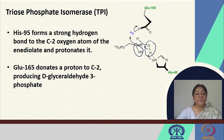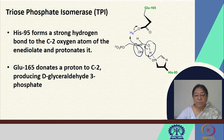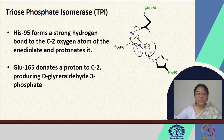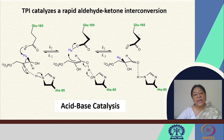In this enediolate intermediate, we have two OH groups forming the diol and a double bond forming the 'ene.' Histidine 95 forms a strong hydrogen bond to the C2 oxygen atom and protonates it, then glutamic acid 165 donates a proton to C2, producing the product. The overall reaction is an acid-base catalysis example involving an isomerase.